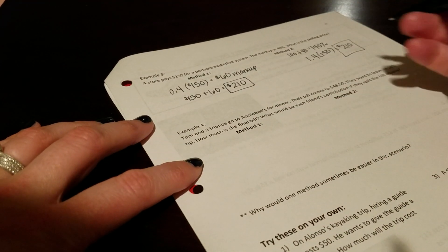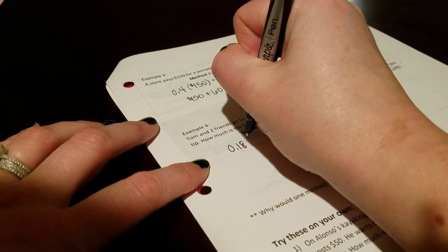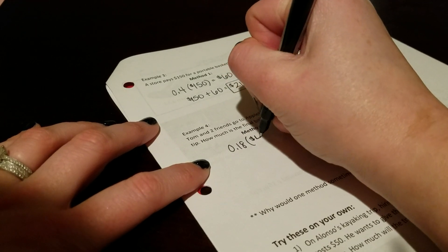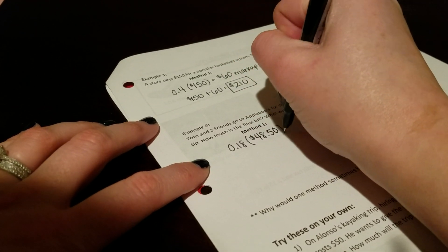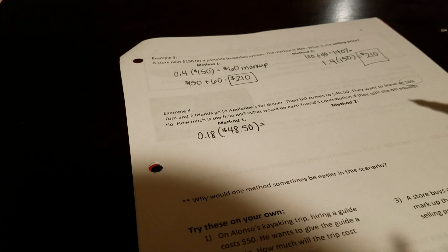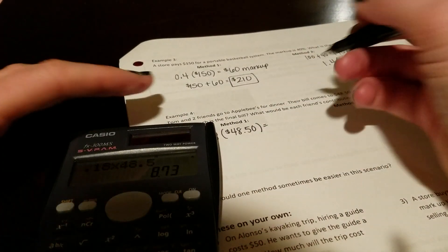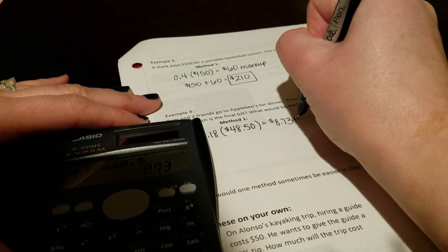So in method one, here's our bill. We want to leave an 18% tip. So we're going to do 18% of $48.50. And that would be a tip value of $8.73 tip.